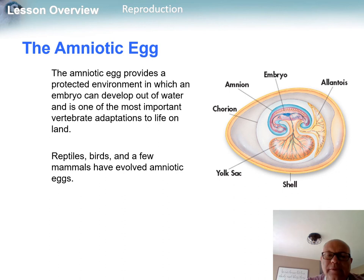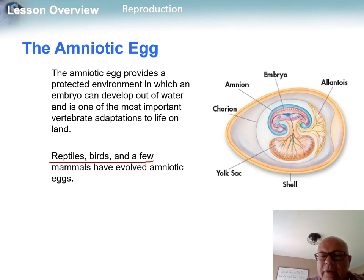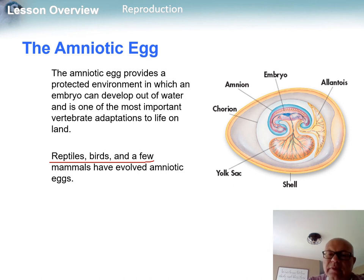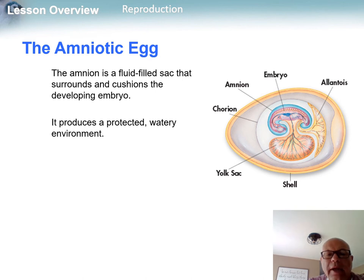Looking at the amniotic egg in reptiles, birds, and a few mammals: the shell provides protection; there's a yolk sac for food; the chorion facilitates gas exchange; the amnion is the watery sac that houses the embryo; and the allantois is where the waste goes.